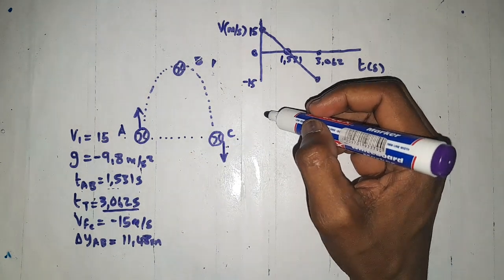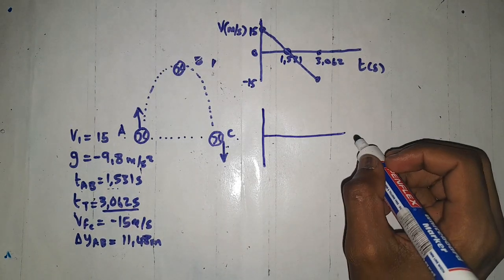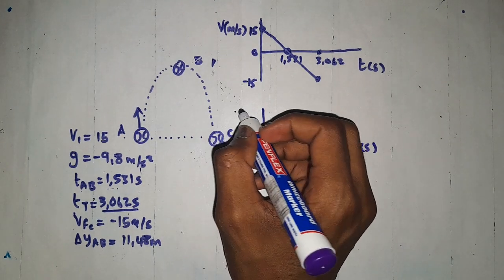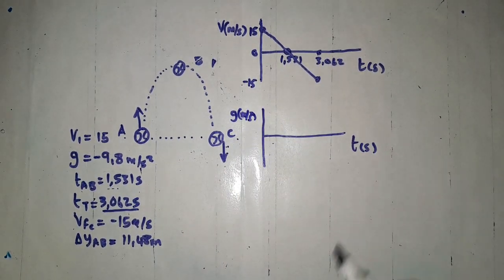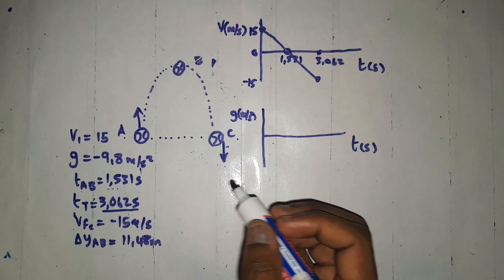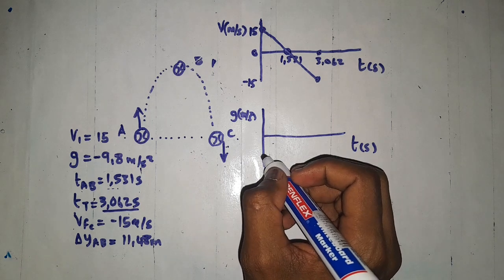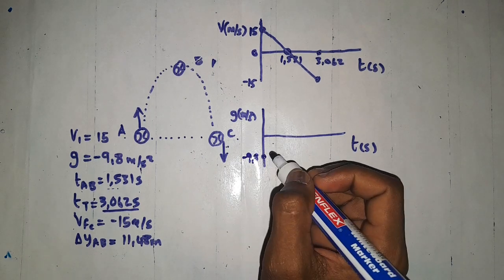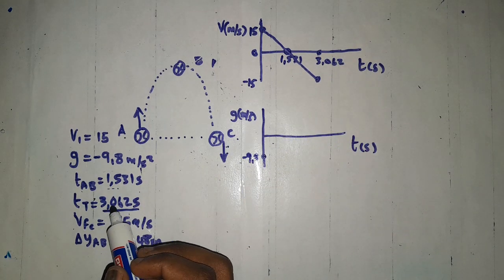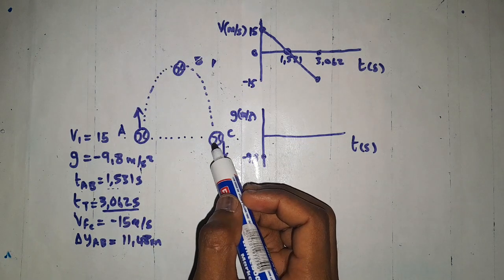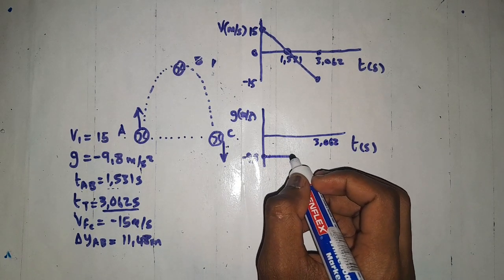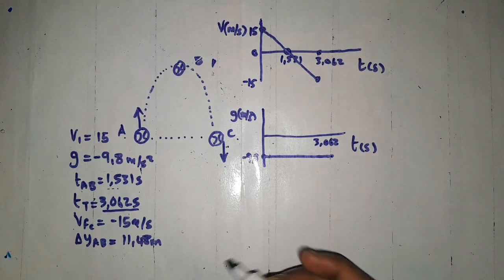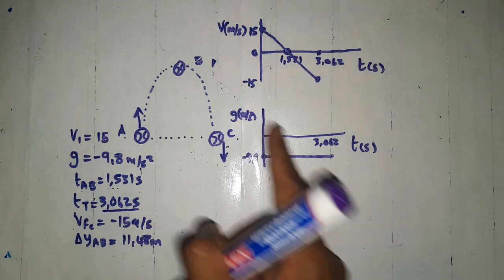For the acceleration versus time graph: the vertical axis is gravitational acceleration in m/s², the horizontal axis is time in seconds. The acceleration is constant at −9.8 m/s² throughout the entire motion from 0 to 3.062 seconds — it never changes, it is constant throughout.